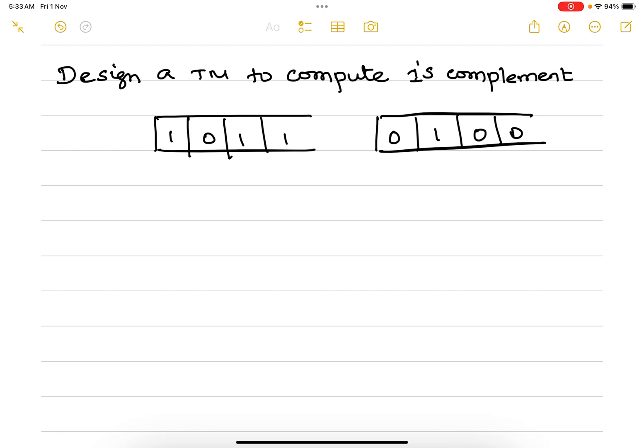Whenever we have a one, it has to be replaced with zero. If we have a zero, it has to be replaced with one, and this should continue till the end. That is the logic we are going to follow in designing this Turing machine.